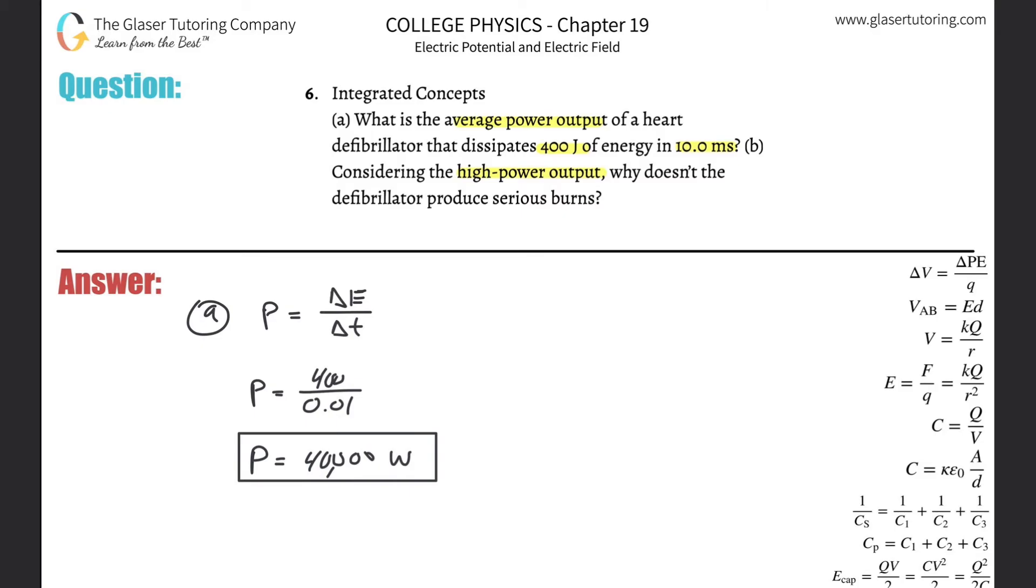At the same time, it's also a function of how long the defibrillator is dispensing or dissipating that amount of energy. If the defibrillator were on for an extended period of time and kept dissipating the 400 joules of energy continuously, that might be a problem.